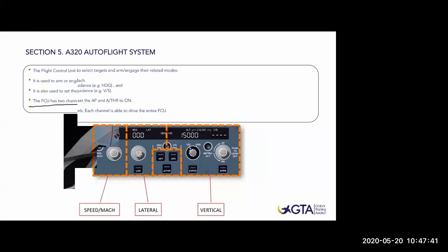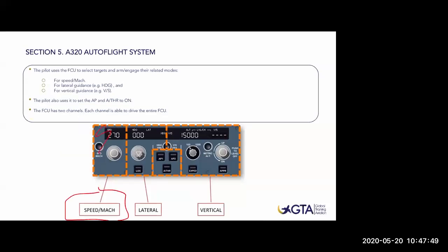This is how the FCU is divided. This part is for speed and Mach. This part can be used for heading, track, navigation, or lateral navigation via GPS. Those are the autopilot and autothrust connection and disconnection push buttons. And this is the vertical part: altitude and climb or descent modes.